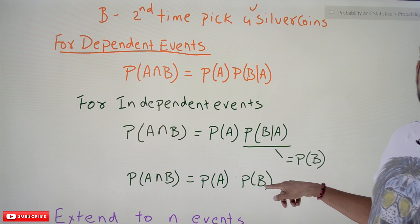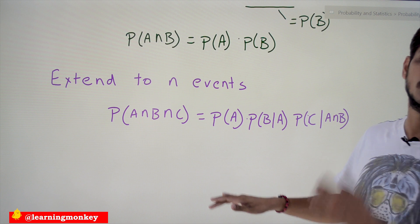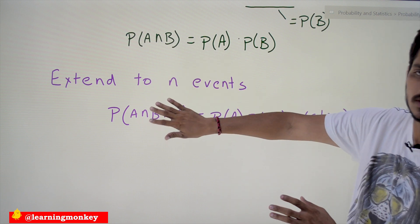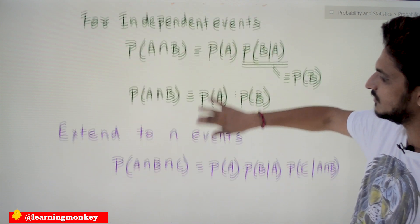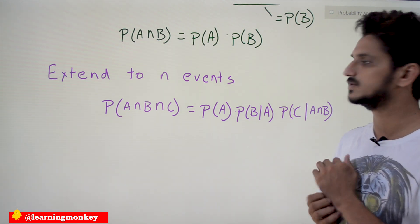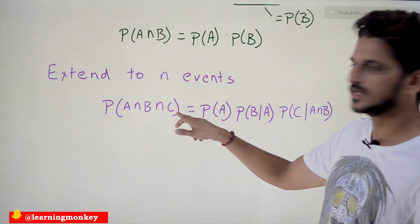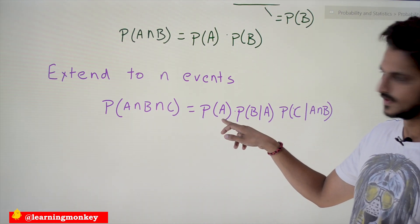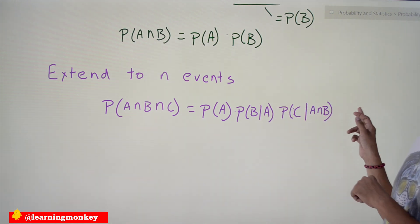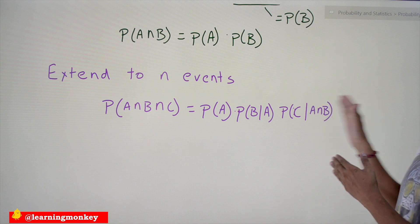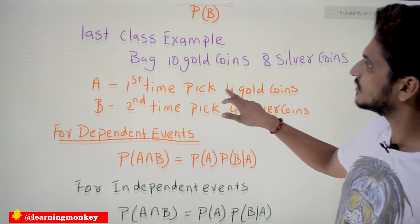We can extend this equation to any number of events. Starting from two variables, going to three: P(A∩B∩C) = P(A) · P(B|A) · P(C|A∩B), meaning the probability of C given both A and B have happened. You can extend this to n events in the same manner.